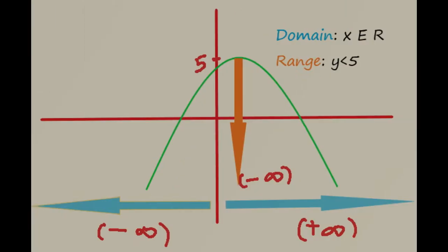In this example, we're going to talk about what the domain and the range for those examples are. For this parabola graph, we see that our domain is from negative infinity to positive infinity, which can be represented as x is an element of R. We get this because we have all possible values for your domain. The range for this parabola starts from negative infinity up to five, so we could say that the range is y is less than or equal to five. And this is how you can use domain and range in questions.